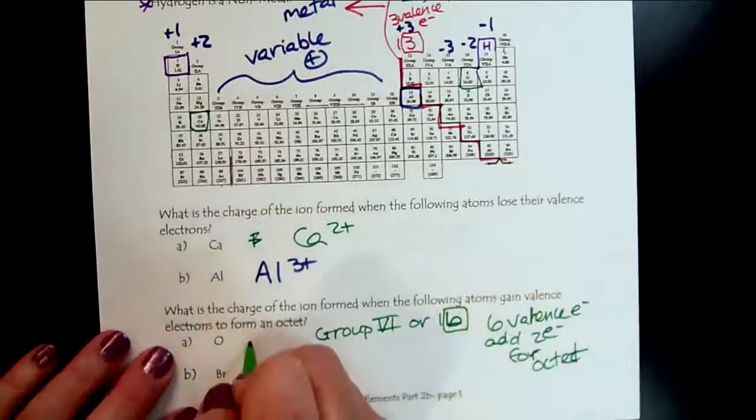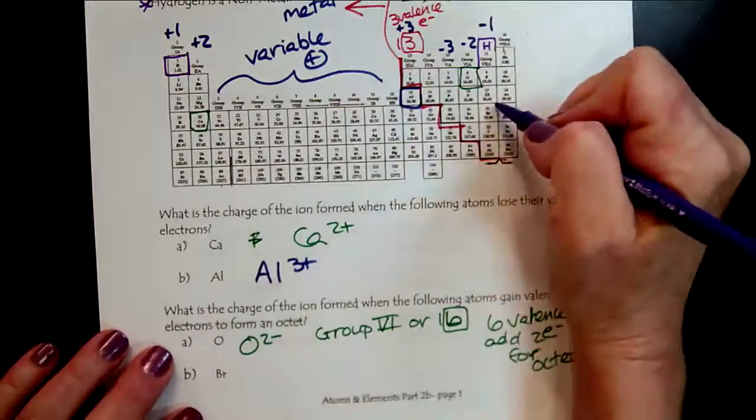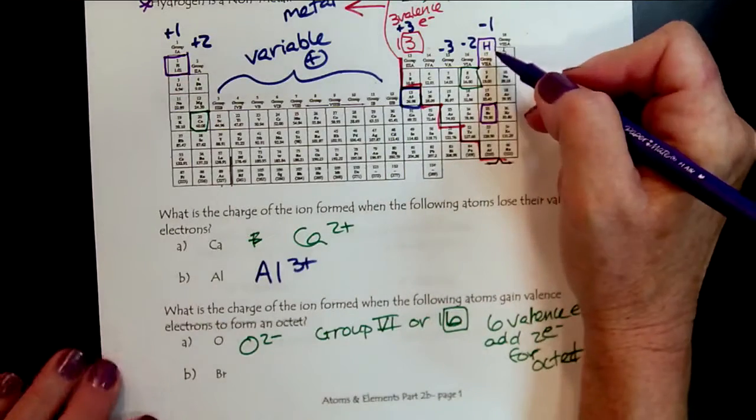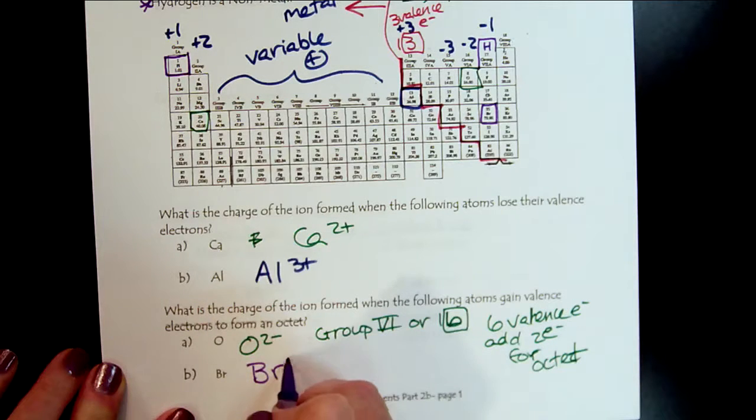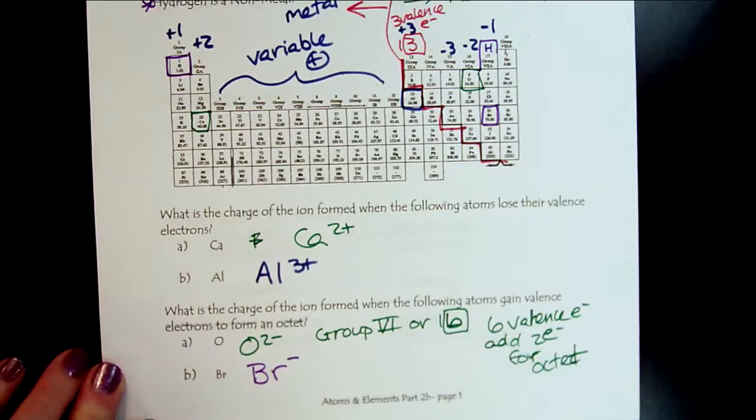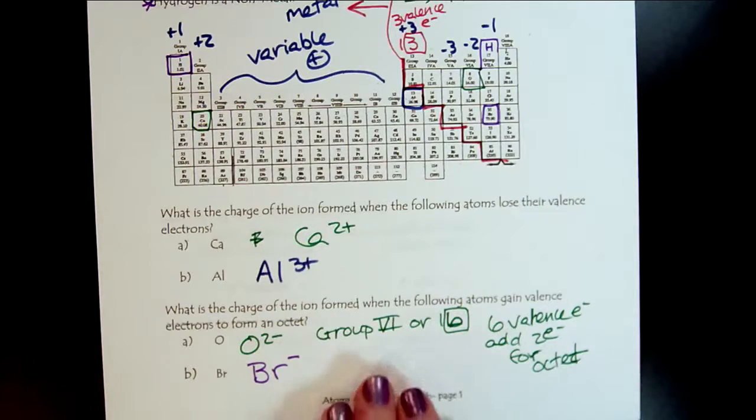That's why oxide is minus two. And then last but not least, here's bromide. Group seven or seventeen. So it has seven valence electrons. So it only needs one to form the octet. So the metals and the nonmetals gain and lose electrons to create the octet.